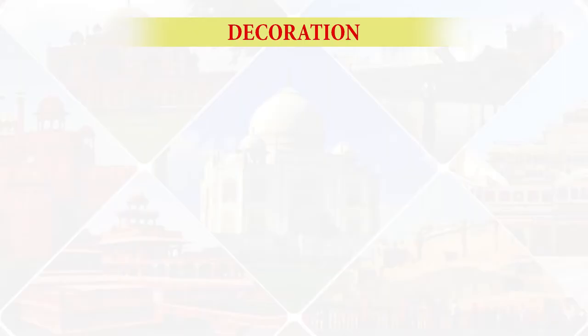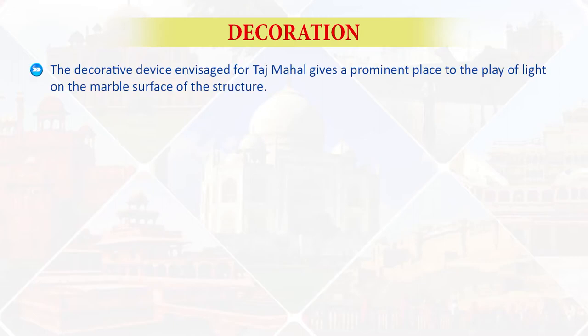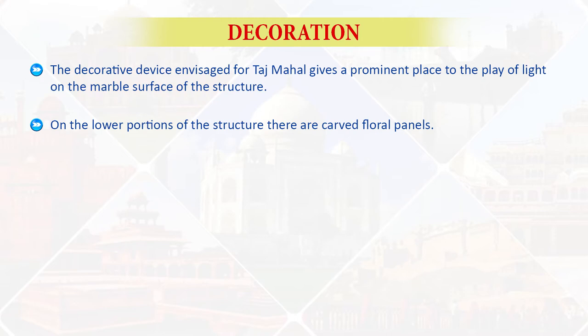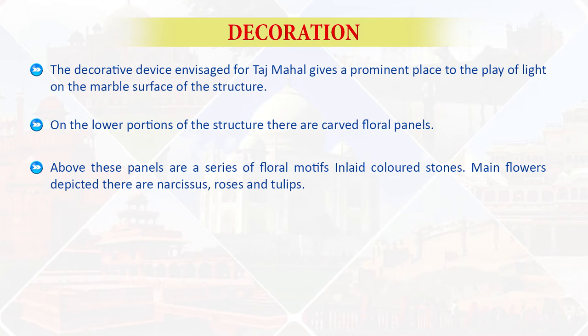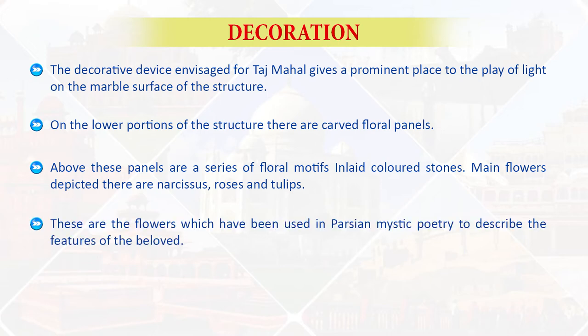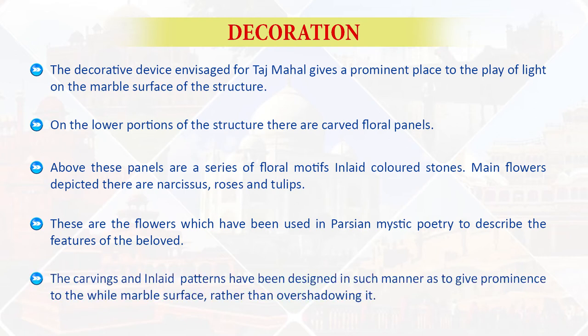Moving further to the decoration — every monument has certain decorative aspects which should be brought to the knowledge of tourists. The decorative device envisaged for Taj Mahal gives a prominent place to the play of light on the marble surface of the structure. On the lower portions of the structure, there are carved floral panels. Above these panels are a series of floral motifs in colored stones. The main flowers depicted there are narcissus, roses, and tulips — flowers used in Persian mystic poetry to describe the features of the beloved. The carvings and patterns have been designed to give prominence to the white marble surface rather than overshadowing it.